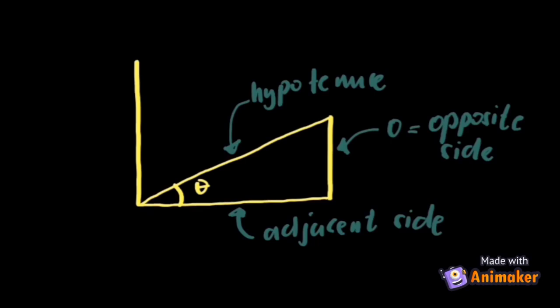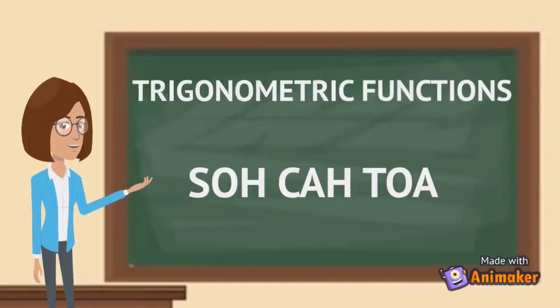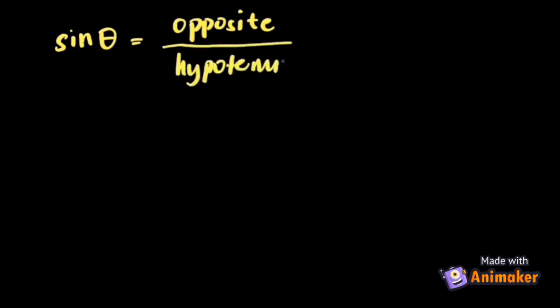Mathematically, we have the trigonometric functions or commonly known as the SOHCAHTOA. Sine theta is equal to opposite over hypotenuse. Cosine theta is equal to adjacent over hypotenuse.